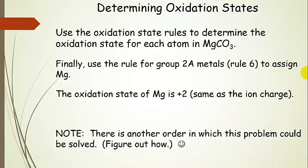You could do this problem in a different order using a slightly different approach. As long as you end up with the oxidation numbers summing to the charge on the compound and you don't violate any of the absolute rules, there's usually more than one way to do this. So keep that in mind — you don't have to do it in the exact same order.